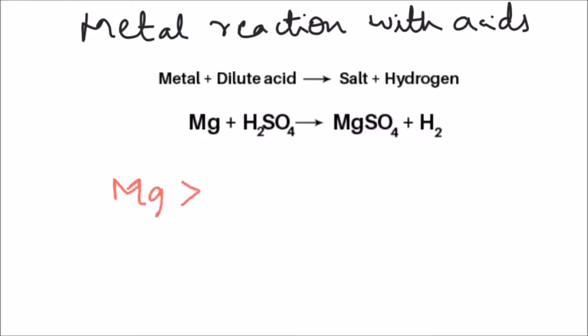The reactivity at which metals react with acids is given by the reactivity series. Magnesium is highly reactive whereas iron is relatively less reactive.